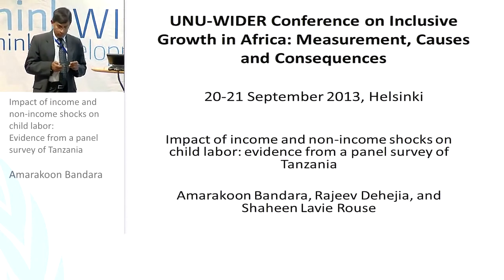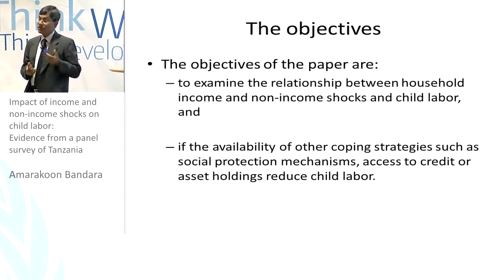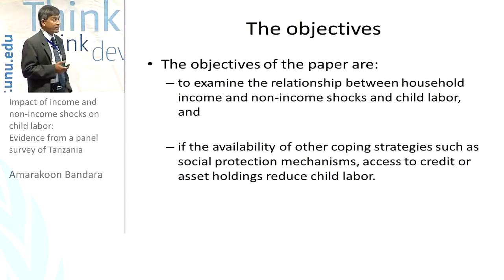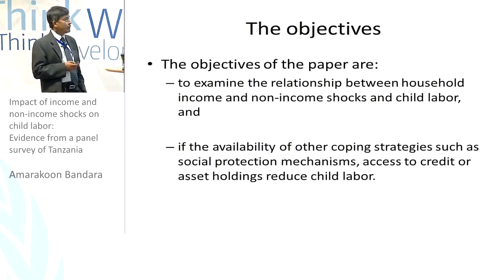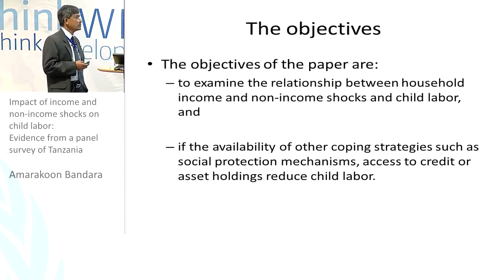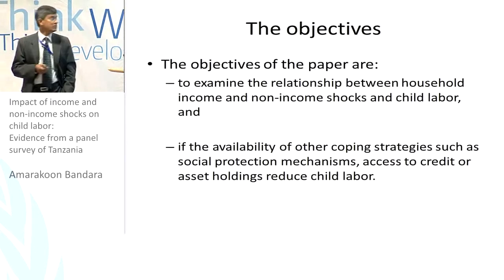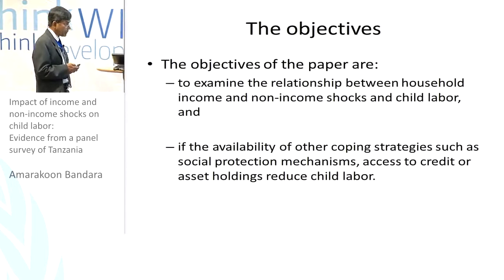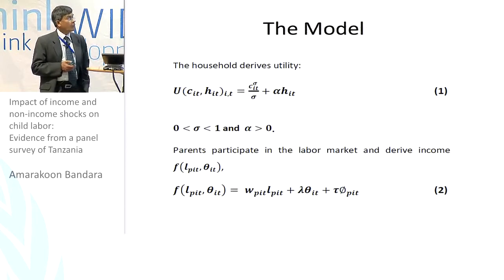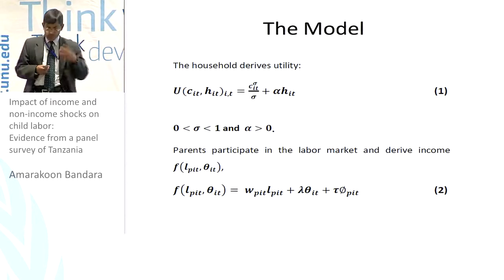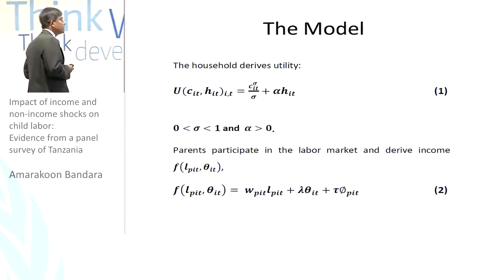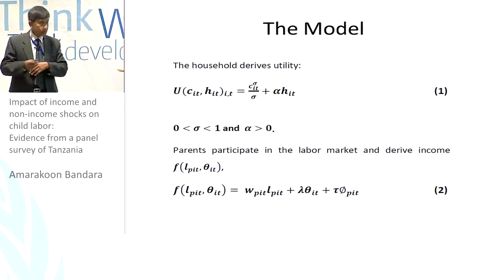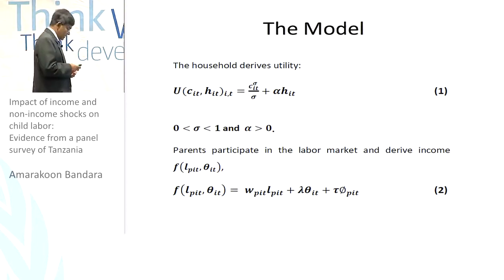The basic objective of this paper is to examine the relationship between household income and non-income shocks and child labor, and to see if the availability of other coping mechanisms or strategies — such as social protection mechanisms, access to credit, and asset holdings — reduce child labor. We rely on the literature to see whether consumption smoothing and the availability of other coping arrangements can explain this relationship.